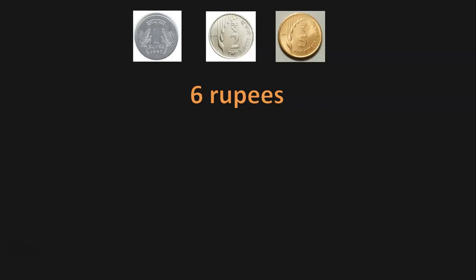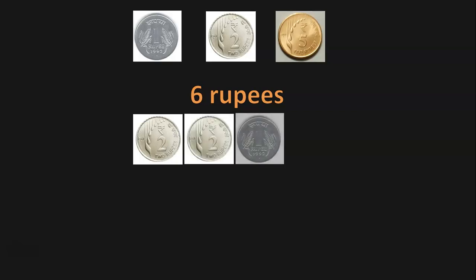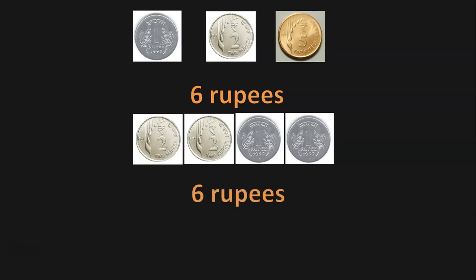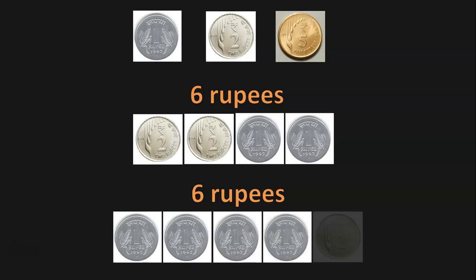With the same combination of 1-Rupee, 2-Rupee, and 5-Rupee coins, let us see more ways to make 6-Rupees. Two 2-Rupee coins with two 1-Rupee coins (2+2+1+1) make 6-Rupees. There is one more possibility: four 1-Rupee coins and one 2-Rupee coin also makes 6-Rupees. So we saw different ways to make 6-Rupees using these three coin denominations.